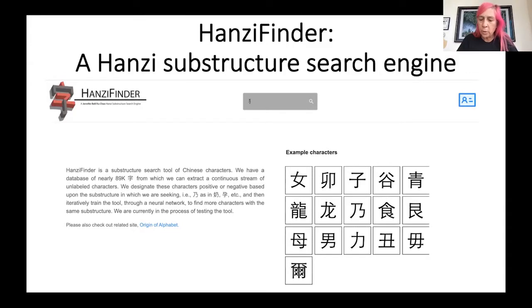Welcome, conference attendees. I'd like to thank the organizers for this opportunity for Xu Chao and I to share our work on the development of HansiFinder, a tool that allows one to search Chinese characters by substructure. This is our homepage of the current tool. We've had three iterations of our tool and we're now on the third iteration.